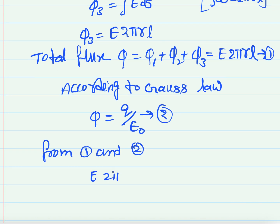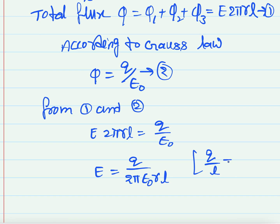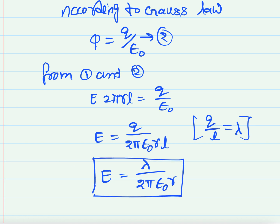From equations 1 and 2: E·2πrl = Q/ε₀, so E = Q/(2πε₀rl). Since Q/l is nothing but lambda, the linear charge density, substituting gives E = λ/(2πε₀r). This is the electric field due to an infinitely long charged conductor.